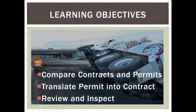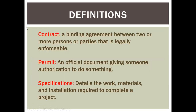Learning objectives today are to compare contract language and permit language, get some ideas on how to translate permit language into contract language and why it's important, and also how to review specs and how to inspect a project using the specs. A couple of definitions: a contract is a binding agreement between two or more persons that is legally enforceable. A permit is an official document giving someone authorization to do something — for example, an authorization to discharge construction stormwater. Specifications are the details that specify the materials and installation information required to actually build what you want to build.